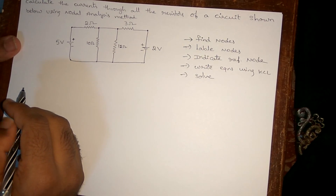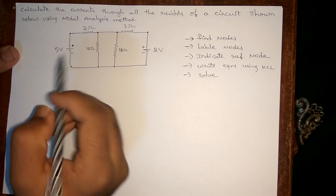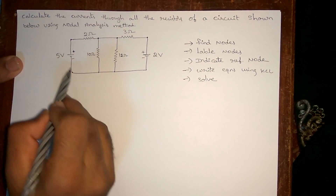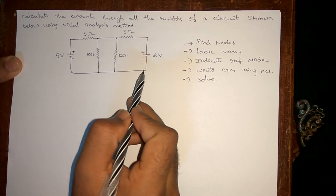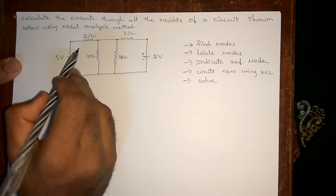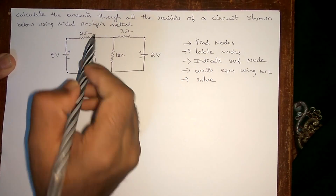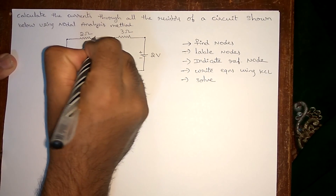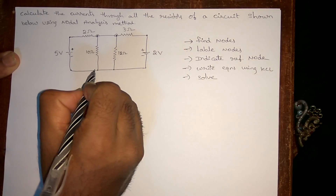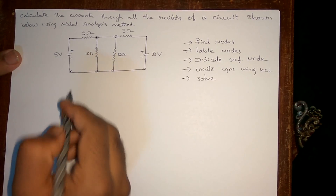The important thing is you have to find the essential nodes, which are very important in solving these types of circuits. Where only two elements are joined, those are not said to be essential nodes. Essential nodes are where more than two elements are joined together. So here this one, this one, and all these joined points become essential nodes.